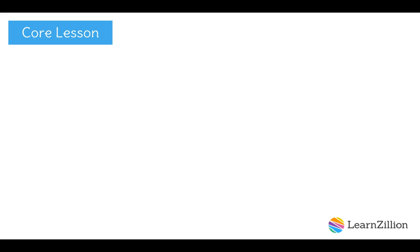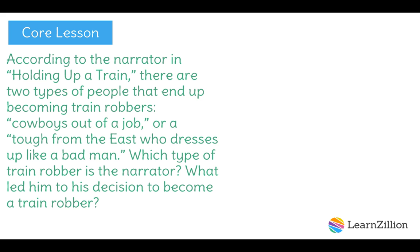Let's go back to the question we started with. According to the narrator in 'Holding Up a Train,' there are two types of people that end up becoming train robbers: cowboys out of a job, or a tough from the east who dresses up like a bad man. Which type of train robber is the narrator? What led him to his decision to become a train robber?